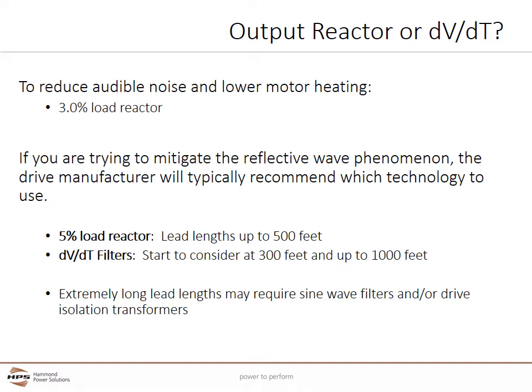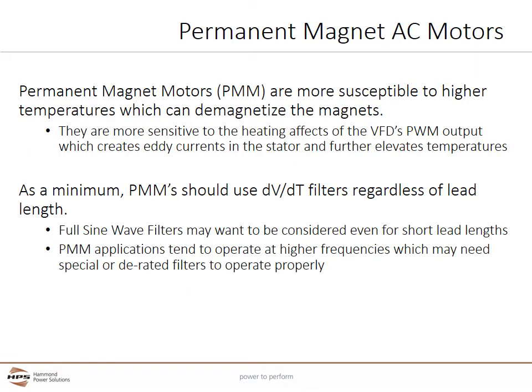DVDT filters combine a load reactor with a filter board containing capacitor and/or resistor components to improve performance over a line reactor alone. DVDT filters are typically considered for lead lengths starting at 300 feet up to at least 1,000 feet. Extremely long lead lengths over 1,000 feet may require sine wave filters and/or drive isolation transformers, which can account for resistive voltage drop in long cables by raising the voltage. Permanent magnet motors or PMMs are more susceptible to high temperatures which can demagnetize them. As a minimum, PMMs should use a DVDT filter regardless of lead length, and full sine wave filters may be considered even for short lead lengths.